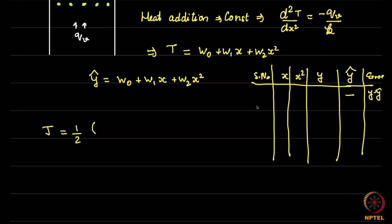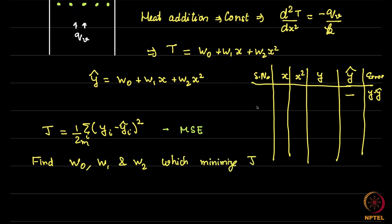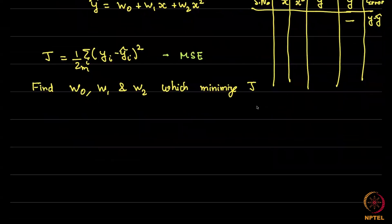Then we calculate J just like before. The cost function is still the same: sum of half of (y minus ŷ)². Generally it is a good idea to take mean square error, so the error remains the same. The mean square error is what we are trying to minimize. Our problem now becomes: find w₀, w₁, and w₂ which minimize J.